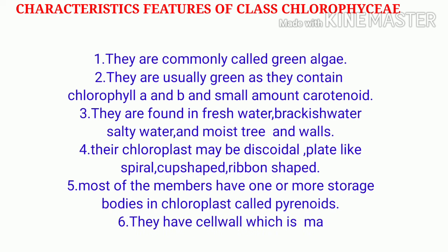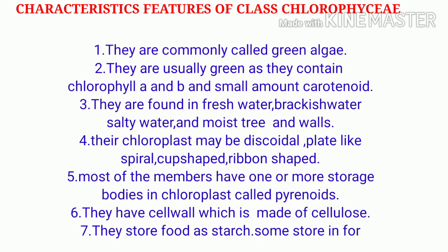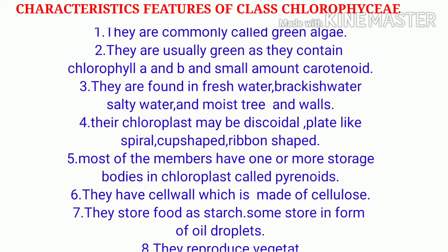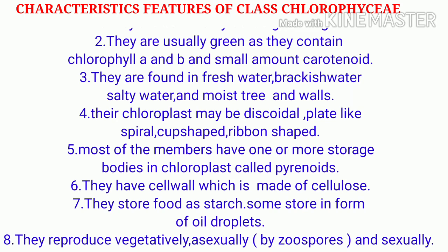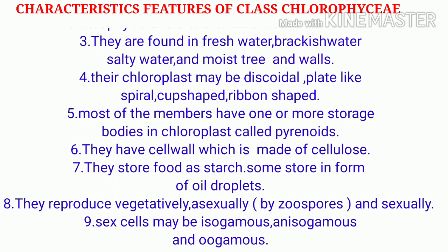The third feature: they are found mostly in fresh water, some in brackish water, some in salty water, and some found in moisture. The next feature: their chloroplasts may be discoid, plate-like, spiral, cup-shaped, or ribbon-shaped — the chloroplasts can be of different shapes.